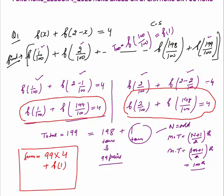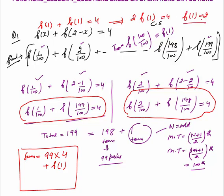To find f(1), put x = 1 in the original equation: f(1) + f(2 − 1) = 4, so f(1) + f(1) = 4, which means 2·f(1) = 4, so f(1) = 2. Therefore the total sum = 99 × 4 + 2 = 396 + 2 = 398.